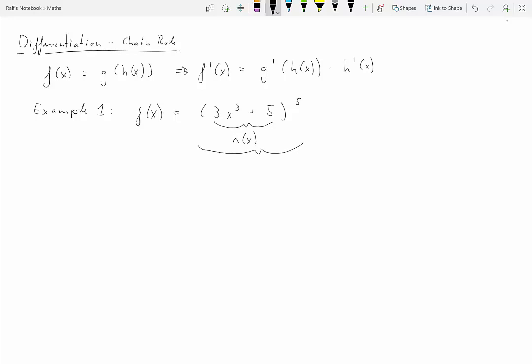And then that outer part, that taking to the power of 5, that is g. Now that is of course g of h, because the argument to the g function is the entire h function. So g of h is of course nothing else but h to the 5. So let's calculate the derivative f prime of x. Let's do this step by step.